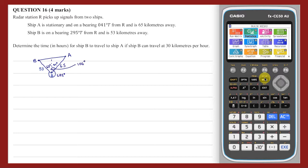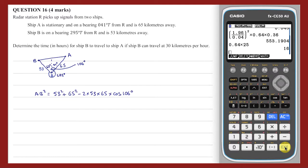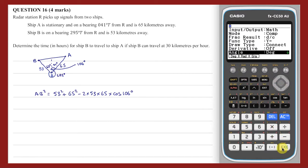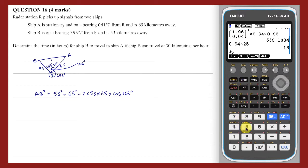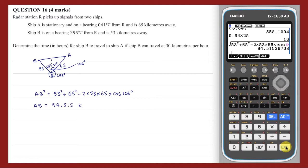With that diagram completed, we can calculate the length AB, which we will need to find the time taken to travel this distance. We can find this length using the cosine rule. The cosine rule applied to this triangle looks like this. From this, length AB can be calculated. My calculation is to be performed using degrees. So I will need to change my angle measure from radians as it is currently set to degrees via the setup. This gives a length AB equals 94.515 kilometres.